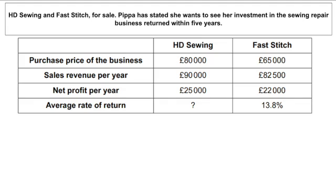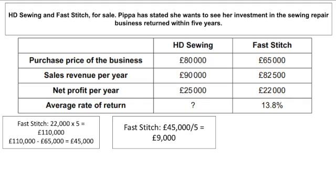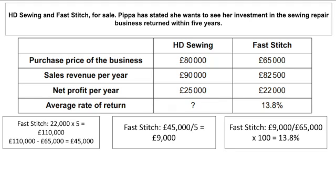Let's go through an example. We've got FastStitch and HD Sewing. FastStitch's average rate of return is already given as 13.8% — let's see how. First, £22,000 times five years gives £110,000, minus the purchase price of £65,000, equals £45,000 for step one. Step two: divide by five years to get an average annual profit of £9,000. Step three: divide £9,000 by the purchase price of £65,000 times by 100, giving us 13.8%.